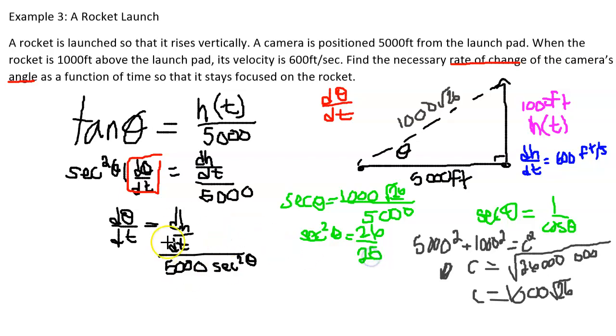And now we can substitute all of the unknowns into the right side of our equation to get a solution for dθ/dt. So dθ/dt is equal to the change, the rate of the change of the vertical height, which was 600 feet per second.